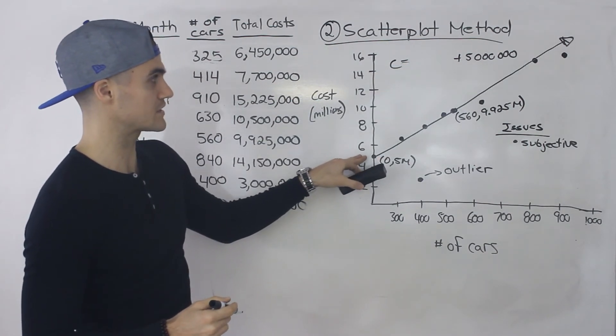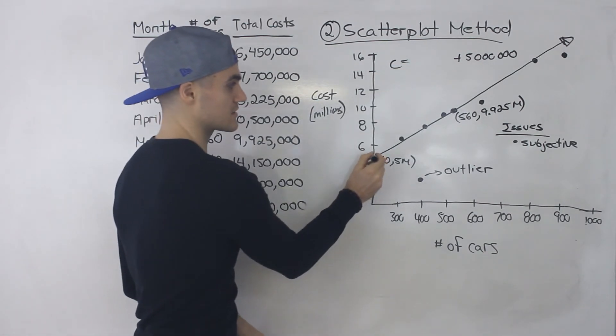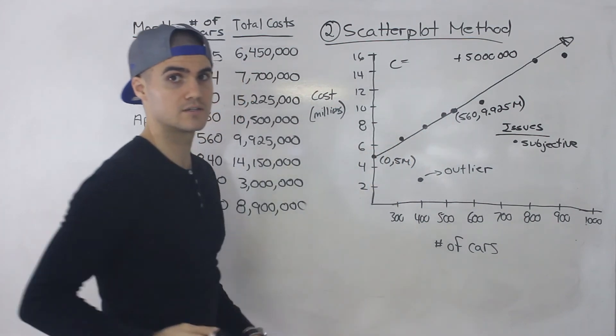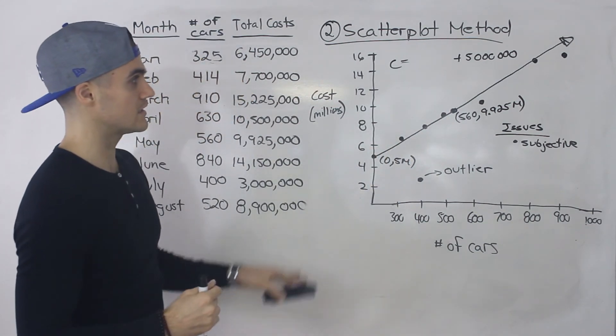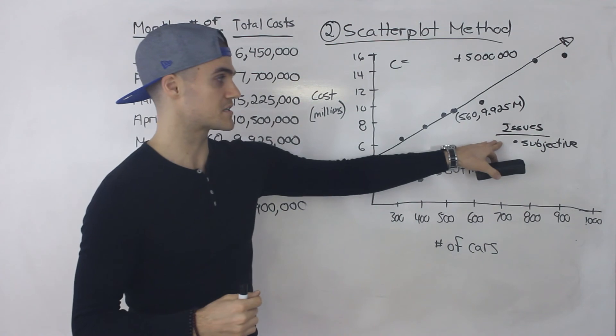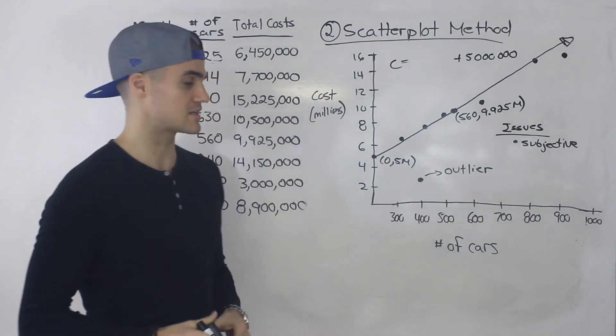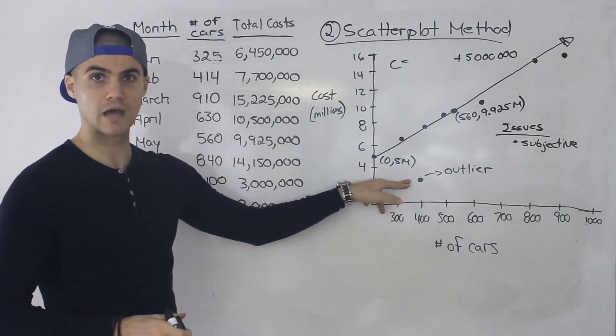And probably best to estimate the fixed cost first and then use that fixed cost as a point and then another point to find the slope. Again the issue with this method it's very subjective but one of the biggest advantages is you could spot outliers.